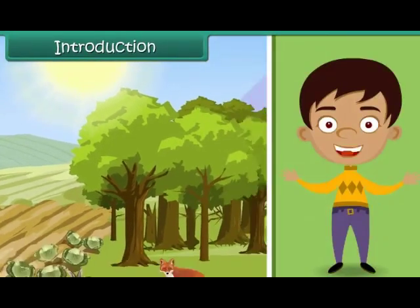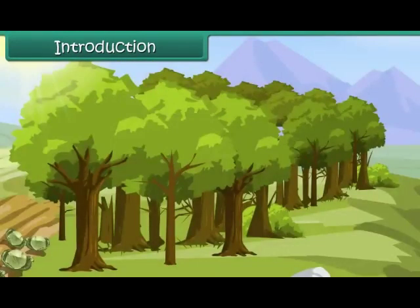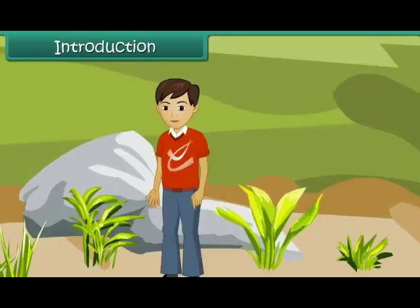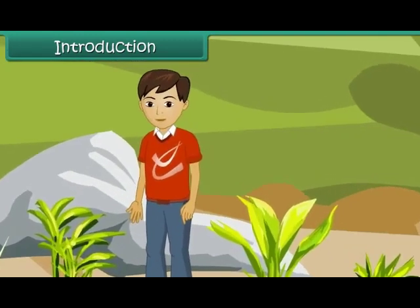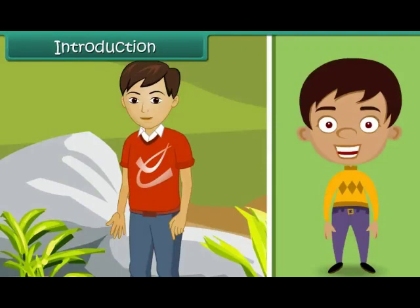Different life forms are present around us — plants, insects, animals, and of course human beings. Every living thing is made up of different body parts, and each part has a specific task assigned to it. In this lesson we will look at the parts of a plant body and understand their functions.